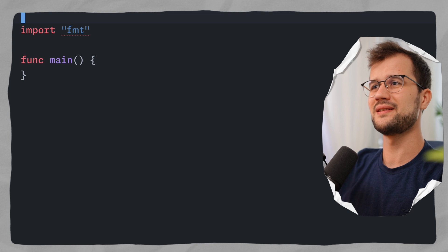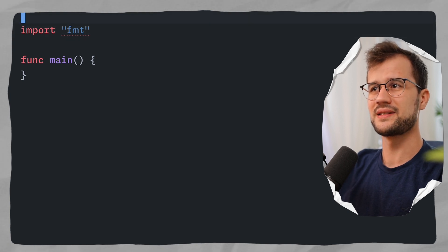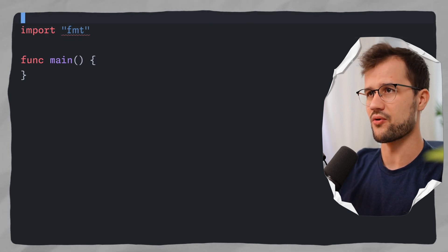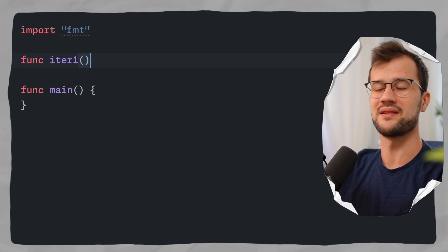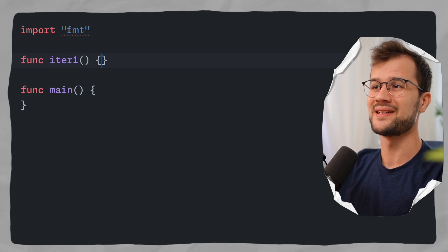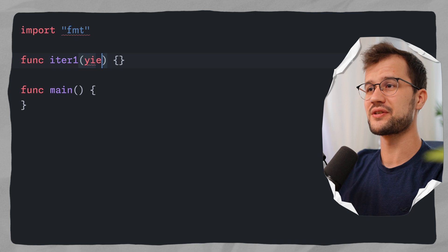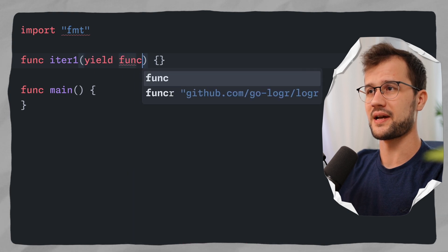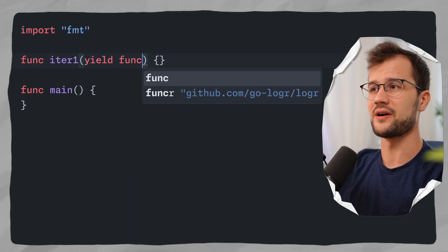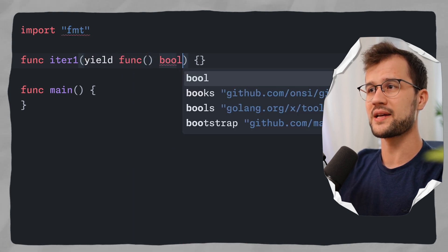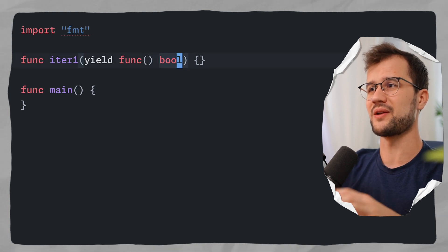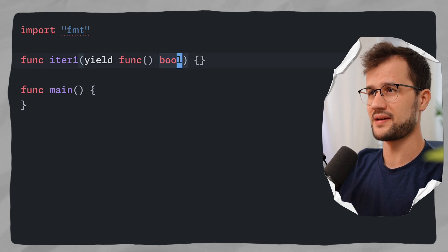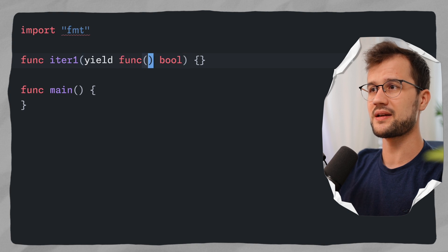Let's quickly look at an example of how to define an iterator in Go. To define an iterator, it is just a function that takes in a function as another parameter. This function is mostly called yield, and it is of type function. It always has to return a boolean.